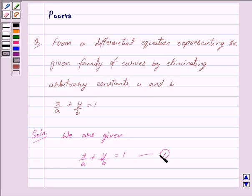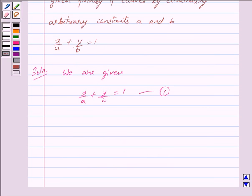Let us mark this as equation 1. Since the above equation consists of two arbitrary constants, for eliminating them we shall differentiate equation 1 two times.